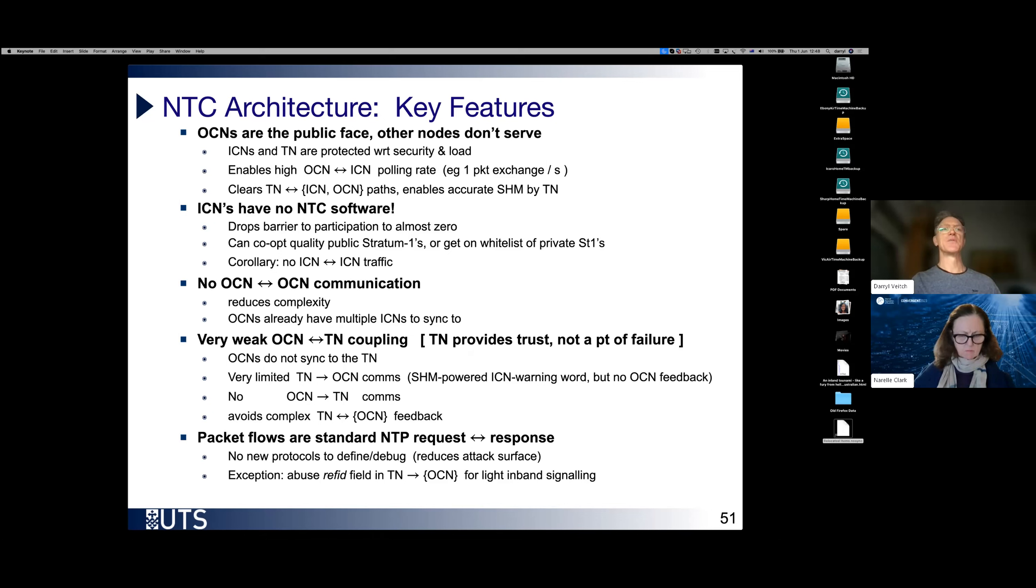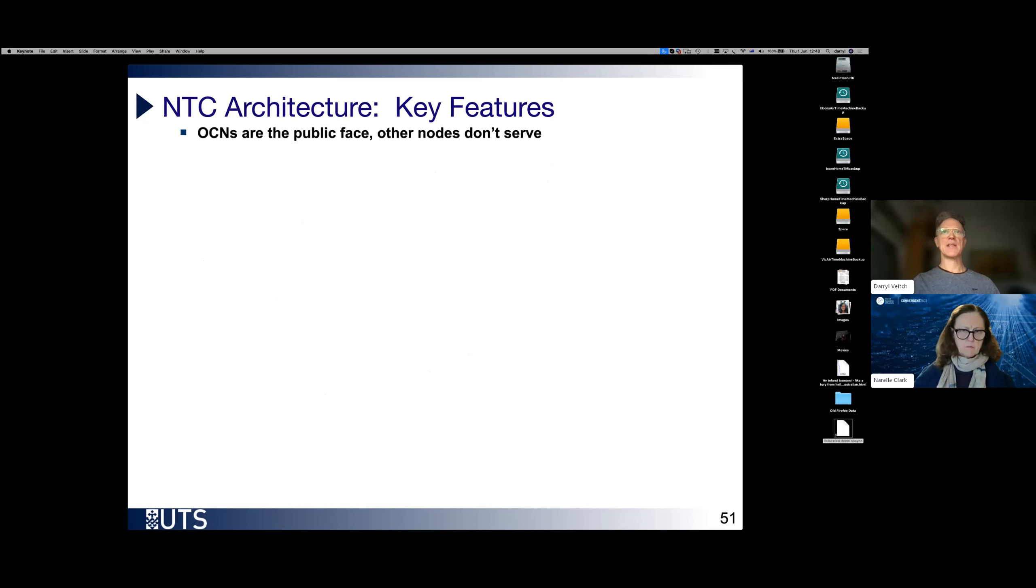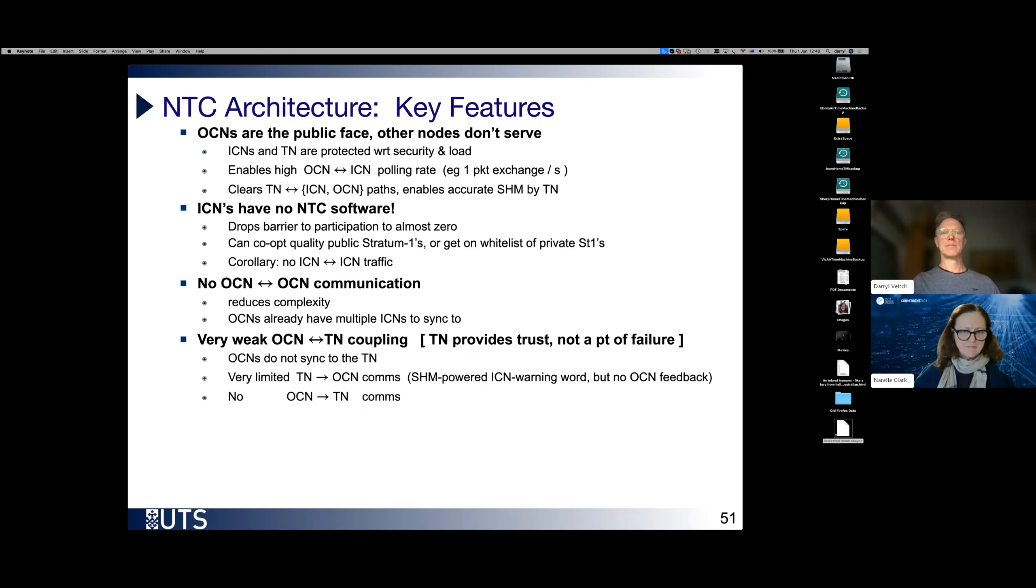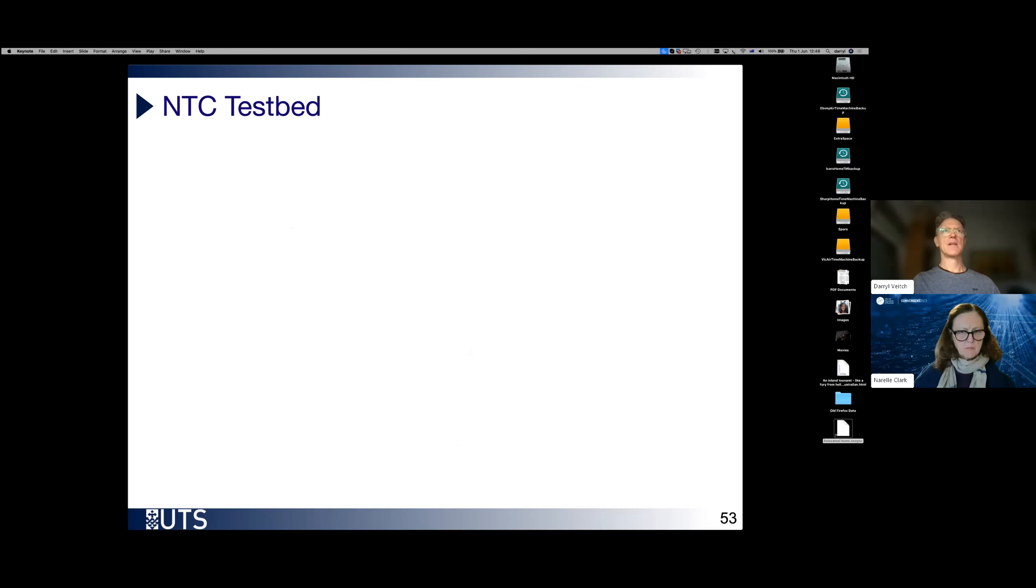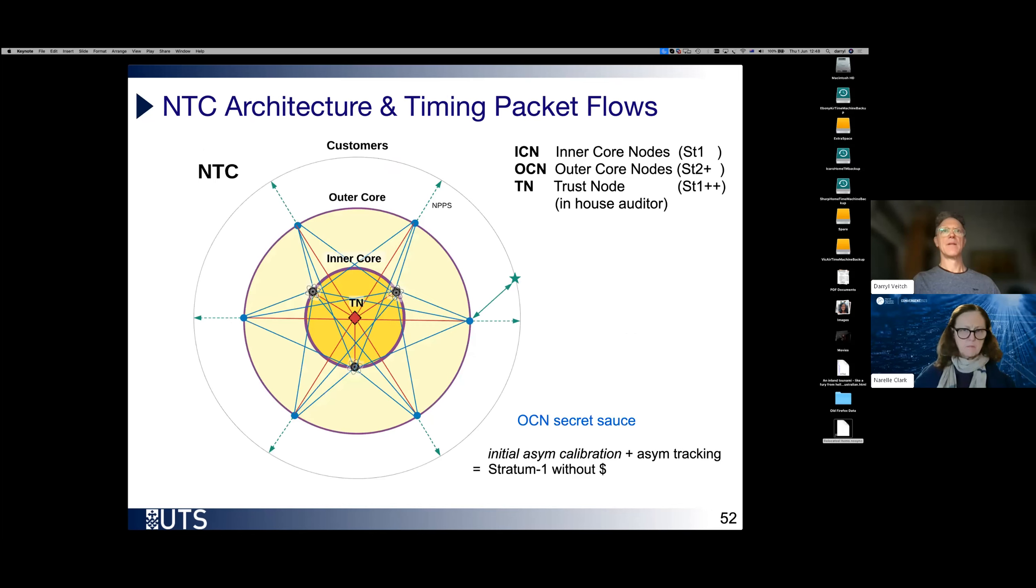Coming back to the figure, we see this OCN here, which is not talking to other OCNs, but it is talking to each and every one of the inner core nodes, and it is not synchronizing to the trust node. Now, there's a secret sauce here. The outer core nodes are stratum twos, but they're not just any stratum two. And one important reason why they're special is that we have this insight. If we can couple this with a one-off calibration, so that we know what asymmetry is at a point in time, followed by accurately tracking it, then we know asymmetry for all time.